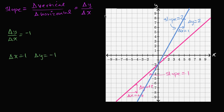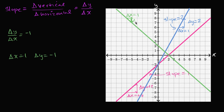A line with a slope of negative one would look like this. Notice, as x increases by a certain amount — our delta x here is one — y decreases by that same amount instead of increasing. So this is what we consider a downward sloping line. Change in y over change in x equals negative one over one, which equals negative one. The slope of this line is negative one.